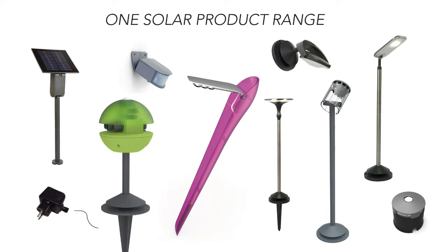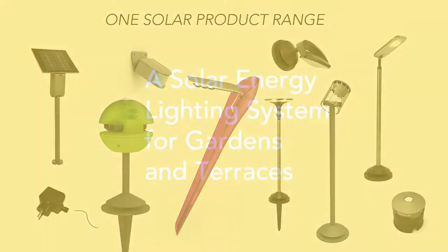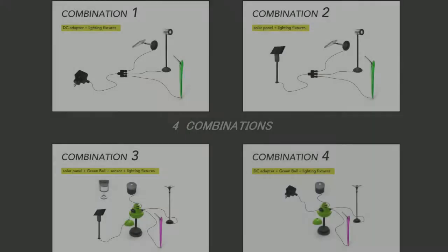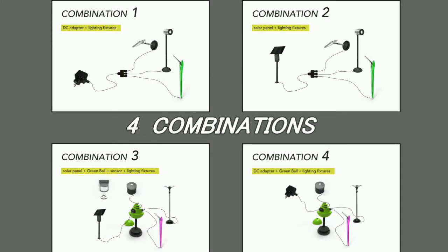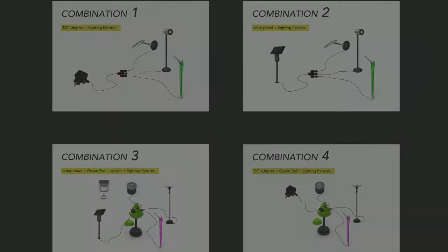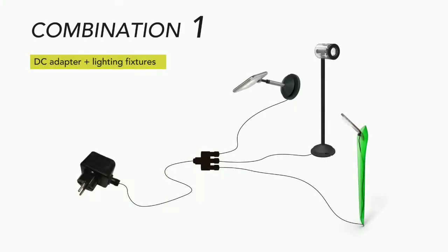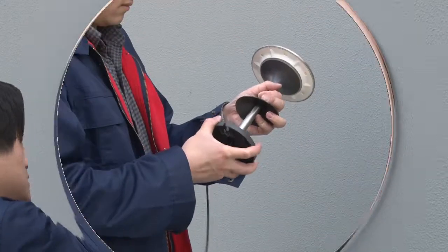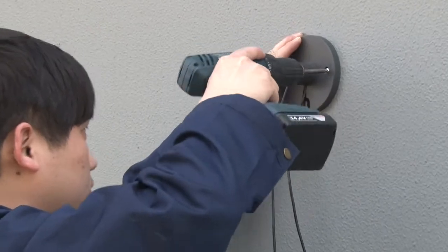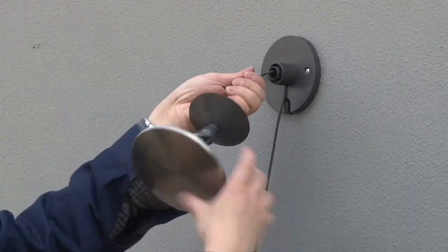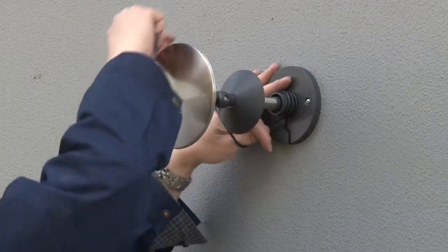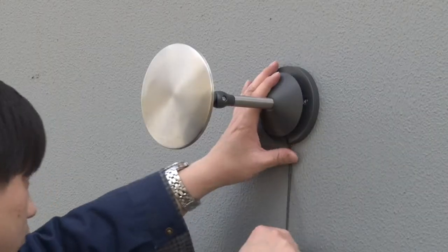SunConnect is a solar energy lighting system for gardens and terraces. There is a choice of four combinations. Combination one: DC adapter plus lighting fixtures. We prepared different kinds of lighting fixtures for different application scenarios. Following is the installation method for each kind of lighting fixture.